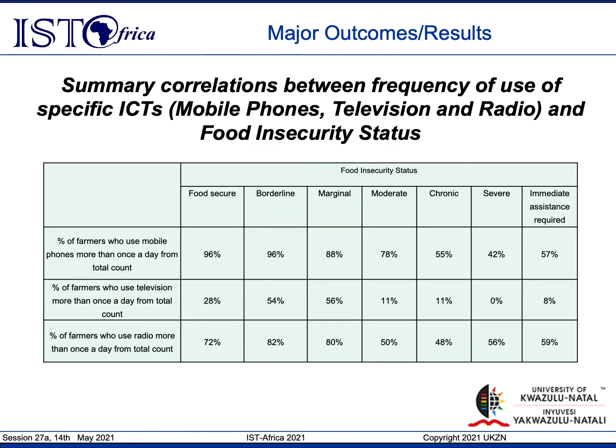A major outcome of the study was based on the correlation between the frequency of use of specific ICTs — that is, mobile phones, television, and radio, which were the three most highly used technologies — and the food insecurity status. The analysis revealed that farmers classified as marginal, borderline, or food secure used these three technologies to a larger extent as you move towards food secure. Farmers classified as moderate, chronic, severe, and immediate assistance required tended to use less of these three technologies, and the usage dropped as you moved from moderate to immediate assistance required.